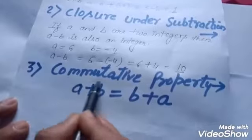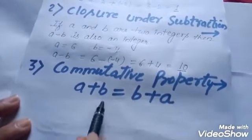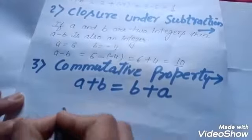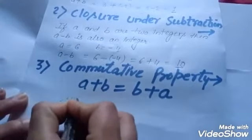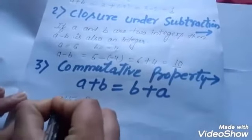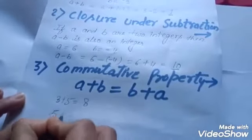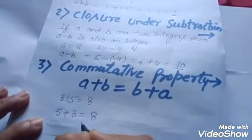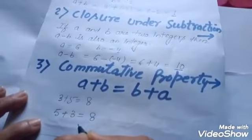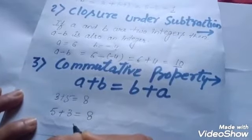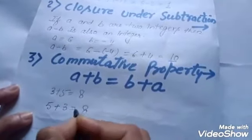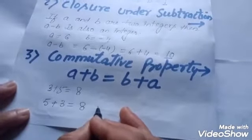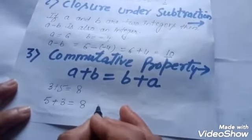Third property: a plus b equals b plus a. We know that three plus five is eight, and five plus three is also eight. That means whole numbers can be added in any order — addition is commutative for whole numbers. Can we say the same for integers also?